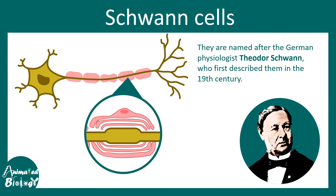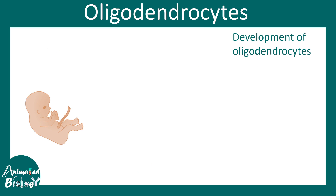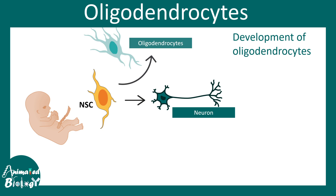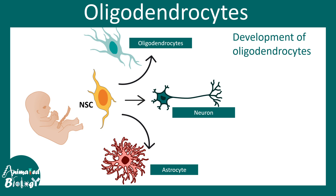Schwann cells were first described by Theodor Schwann in the early 19th century. Oligodendrocytes are a glial cell type derived from neuronal stem cells. Neuronal stem cells in general can give rise to neurons, oligodendrocytes, and also astrocytes.